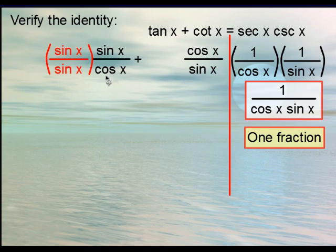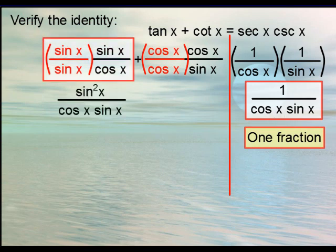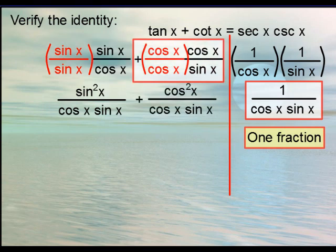Since this first fraction has cosine and the second one has sine we'll multiply top and bottom by sine. Similarly here we'll multiply by cosine over cosine. So that way the denominator will both be sine and cosine, like we have on the right hand side. This first part gives us sine squared over cosine times sine. This second part gives us cosine squared over cosine times sine.